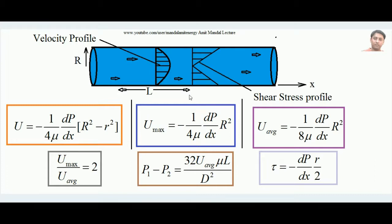For two points that are distance L apart in the pipe, the pressure difference is: p1 − p2 = 32μ u_avg L / D², where D is the pipe diameter, L is the distance between the points, and μ is the viscosity. This is called the Poiseuille formula. Since the right-hand side is always positive, p1 is always greater than p2, confirming pressure continuously decreases in the flow direction.